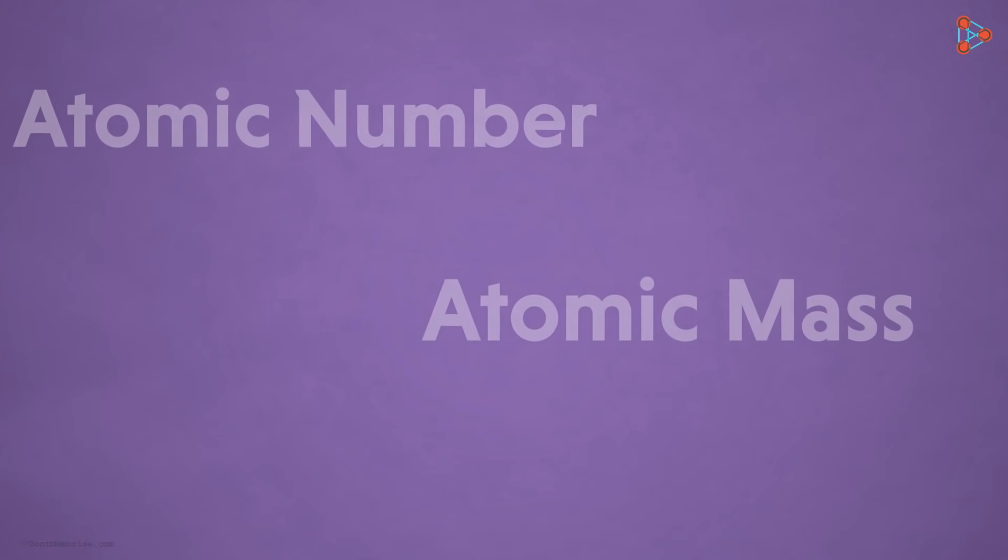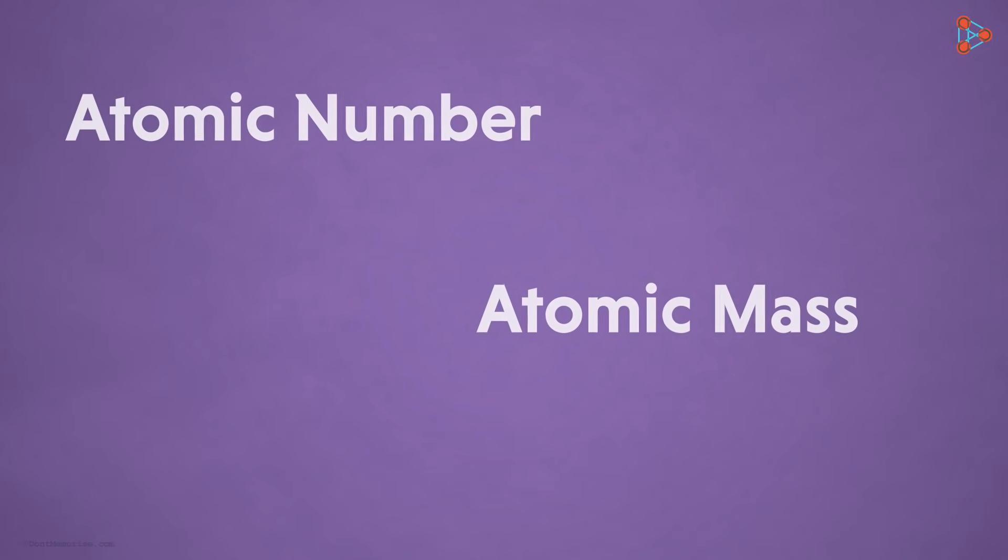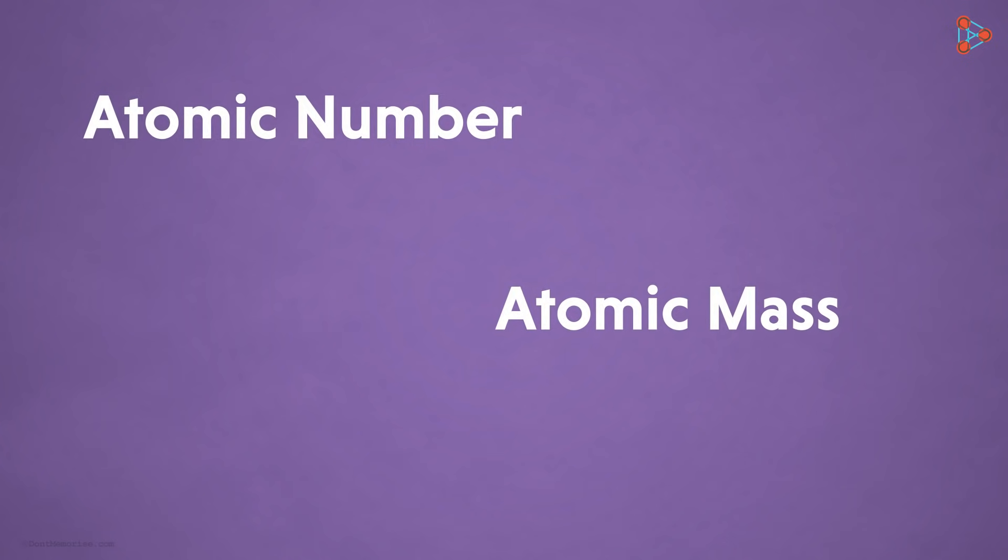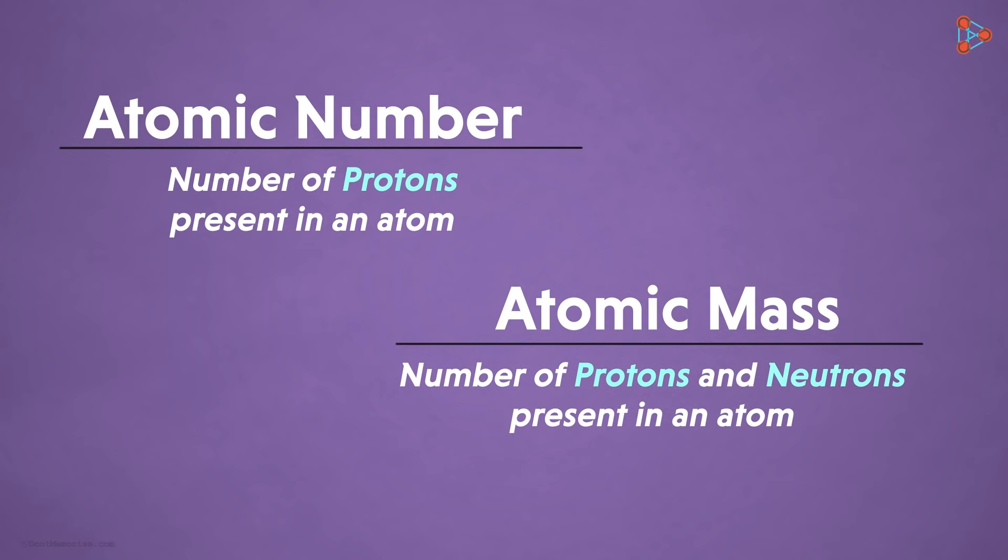By now we are aware of what exactly the concept of atomic number and atomic mass is. Atomic number is simply the number of protons present inside the nucleus of an atom, whereas the atomic mass is the number of protons and neutrons present in the atomic nucleus.